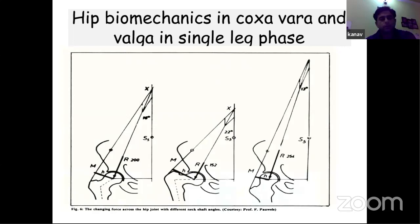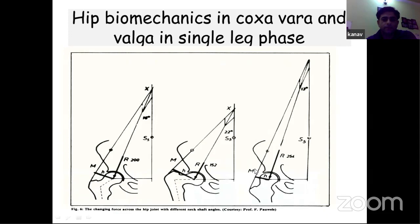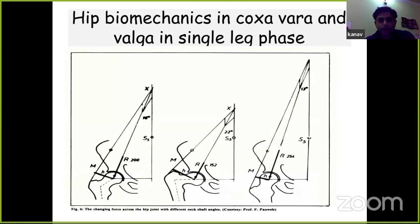In a coxa vara situation the abductor lever arm is increased, so joint reaction forces are decreased, reducing wear — the force is approximately 152 Newtons compared to 200 in a normal hip. In contrast, in coxa valgus the abductor lever arm is severely decreased, increasing joint reaction force and load on the hip. In a native hip this can lead to early arthritis, and in a hip replacement patient it can lead to early failure.